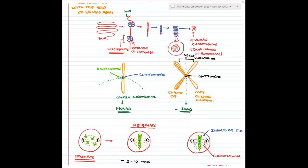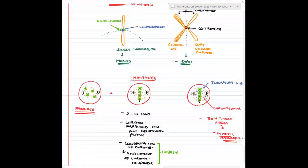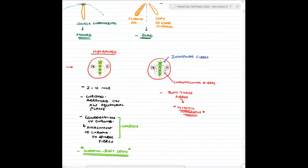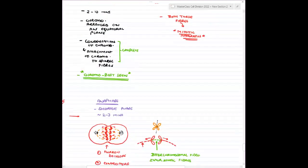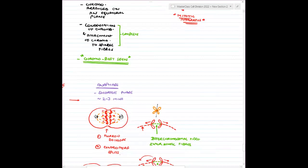The three fibers: first, interpolar fibers — run from one pole to the other pole. Second, chromosomal fibers — have chromosomes attached to them. Third, appearing in anaphase — where one centromere and the other centromere are between them — that spindle fiber is your interzonal or interchromosomal fiber. Together, interpolar fibers and chromosomal fibers give rise to the mitotic apparatus.